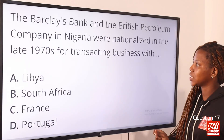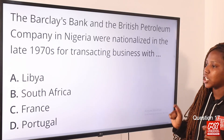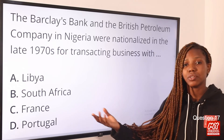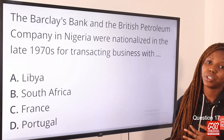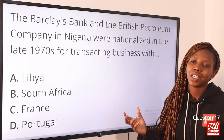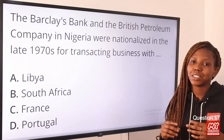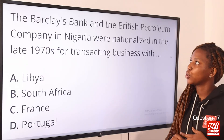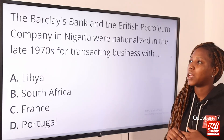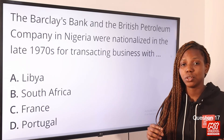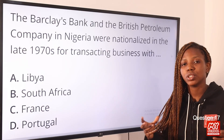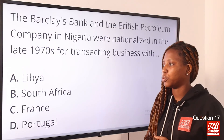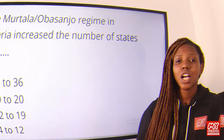Question seventeen: Barclays Bank and the British Petroleum Company in Nigeria were nationalized in the late 1970s for transacting business with — the answer is option B, South Africa. Barclays Bank was nationalized in 1978 for operating with South Africa, meaning it would stop receiving profits from Nigerian corporations. Similarly, British Petroleum was nationalized and lost significant revenue from Nigeria.